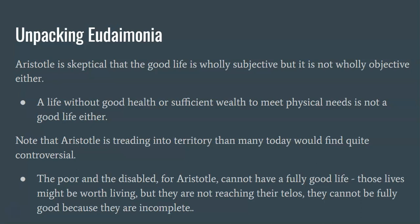He says that a life without good health or sufficient wealth to meet our physical needs isn't a good life — a good human life. Note that Aristotle is probably treading into controversial territory here, at least territory that today we would find somewhat controversial. On his view, the poor and the disabled cannot have a good life, a fully human life. Those lives might be worth living, but those people are not reaching their telos — they cannot be fully good because they are missing some part of what makes a life good.